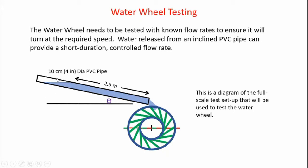Here's the water flume concept. I'm going to have a four inch diameter PVC pipe, 10 centimeters in diameter. I'm going to fill it with water to a length of 2.5 meters. When I remove the plug from the pipe, the water will flow into the wheel causing it to spin. I'll be able to set the angle of this flume to various angles to give me the proper flow rate to get the wheel to spin to the proper rotational velocity.